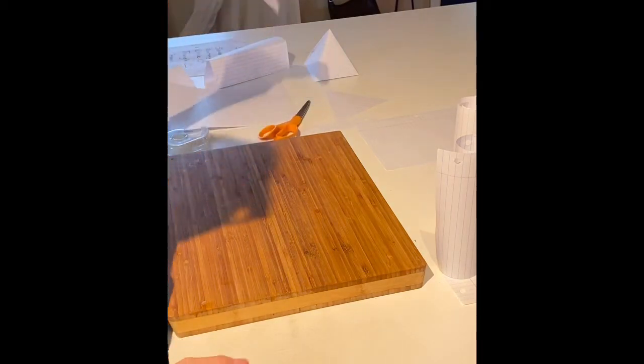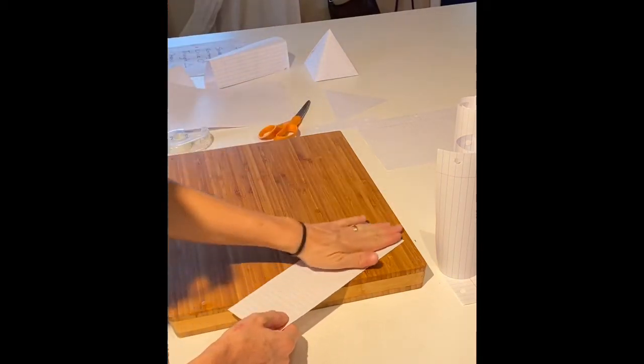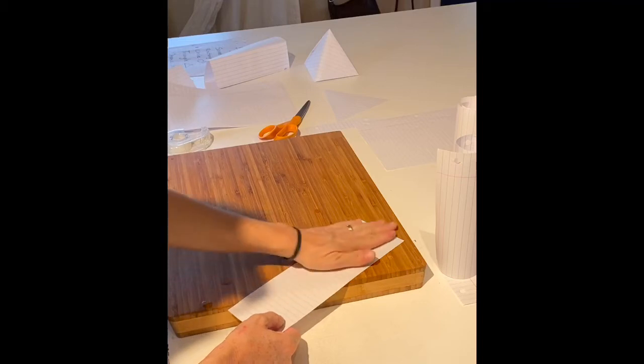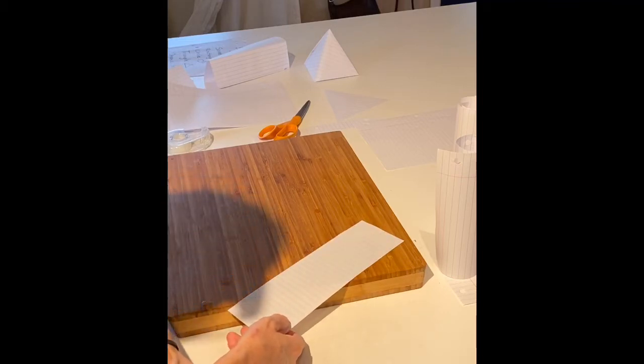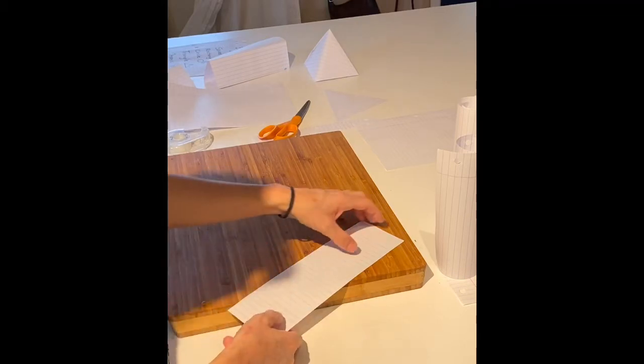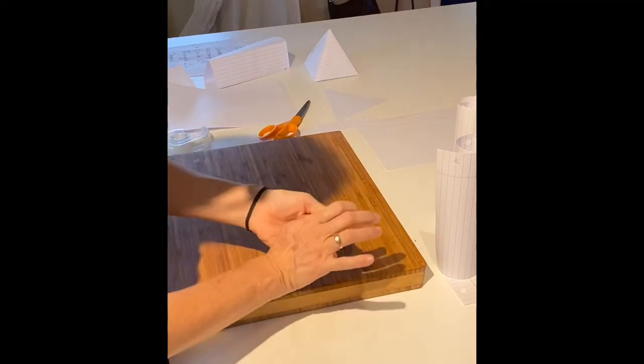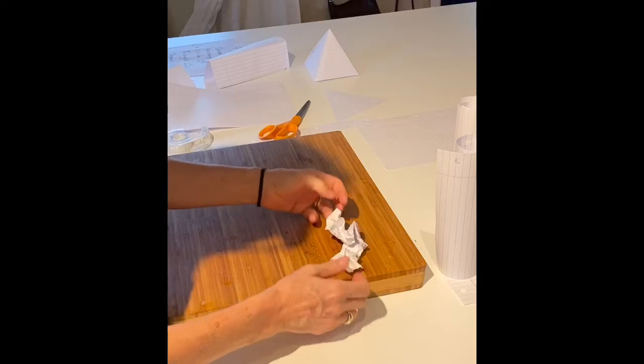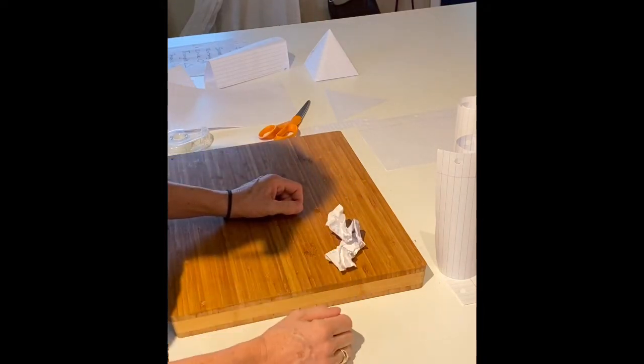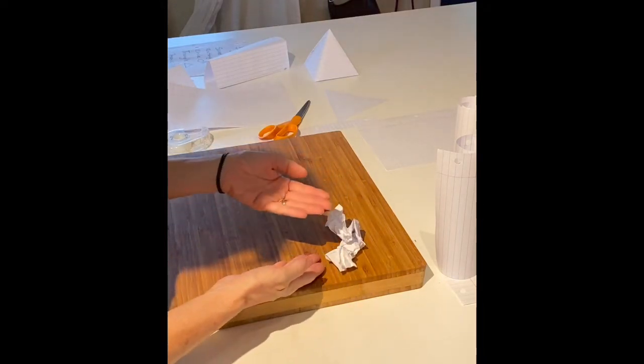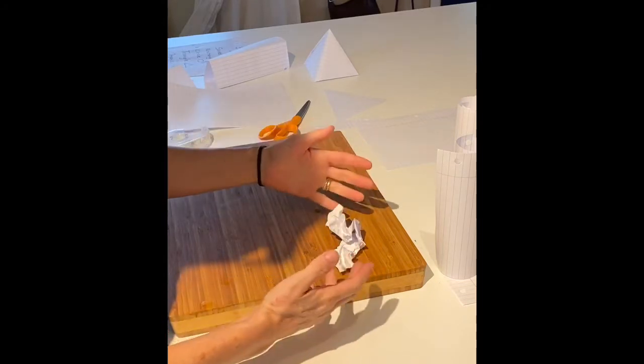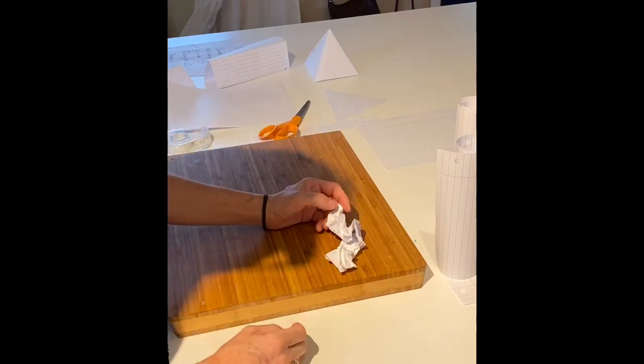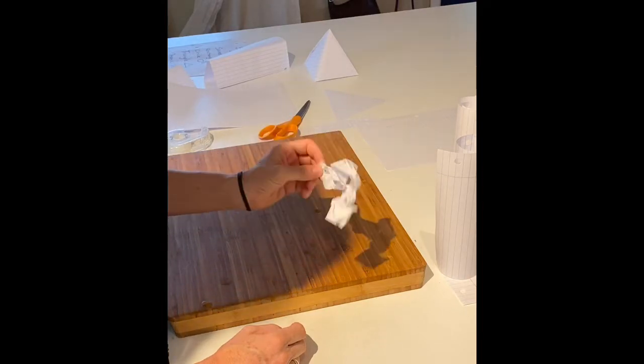After that, we're going to talk about taking a flat shape and turning it into a three-dimensional form called an organic form, or it can be called free form. Well, all you do is just crumple it up a little. You've taken something like a flat shape and now you've got something with height, width, and depth. It's three dimensions, and it's called organic or free form.